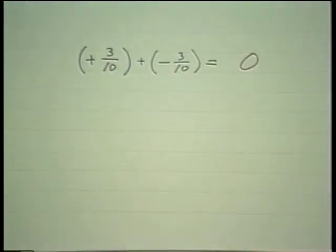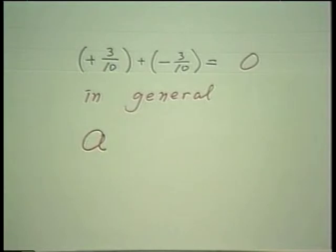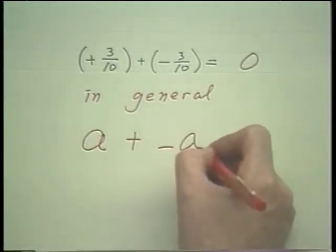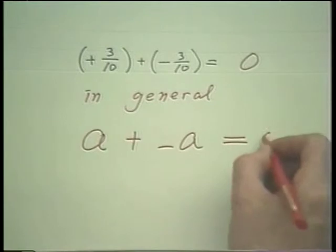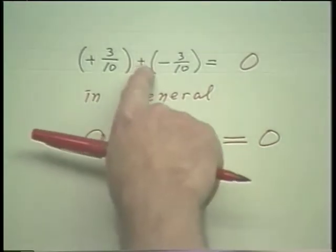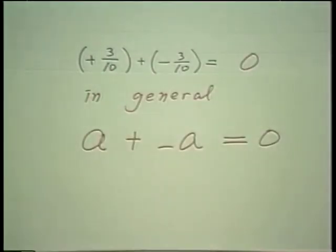Please note this. In general, any number — and I'll let A stand for any number — plus its opposite is always zero. That's a fairly obvious fact, but in algebra this becomes a rather important fact in many situations. So the sum of any number and its opposite is always zero.